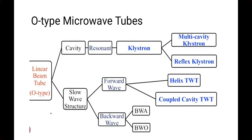So first of all, we'll look at the linear beam tubes. In this video, we are going to mainly focus on the 2-cavity klystron, but we will first give a step-by-step overview of the different types of microwave tubes. In upcoming videos, we will see each type of microwave tube in detail.